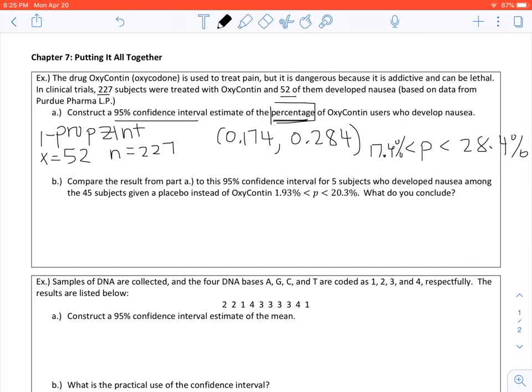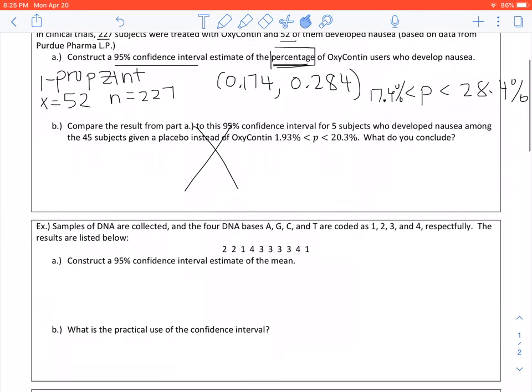Part B says compare the test results from Part A to the 95% confidence interval for five subjects who develop nausea. So for this one, I'm going to go ahead and we'll just cross this one off for right now. That's not anything that you would see on your exam, so we won't stress about it.